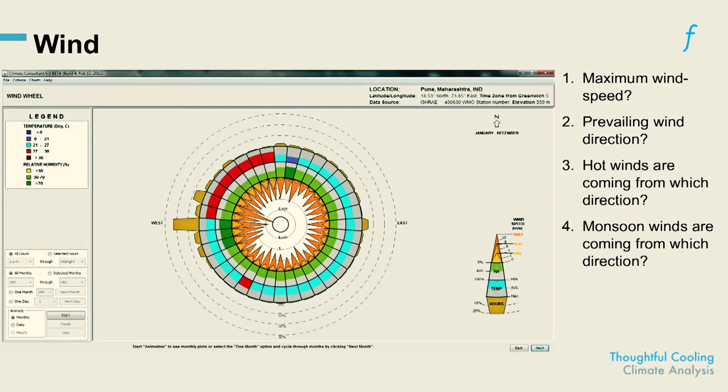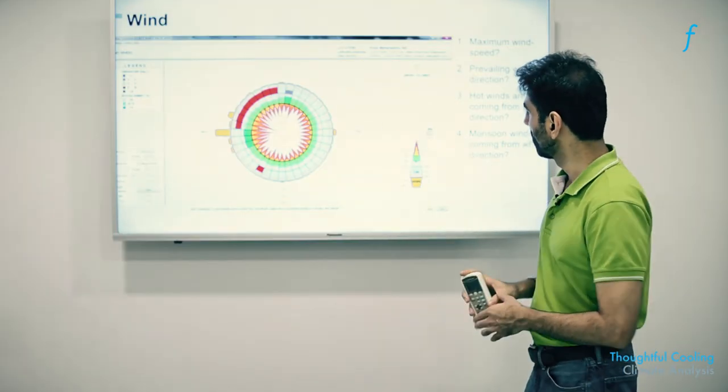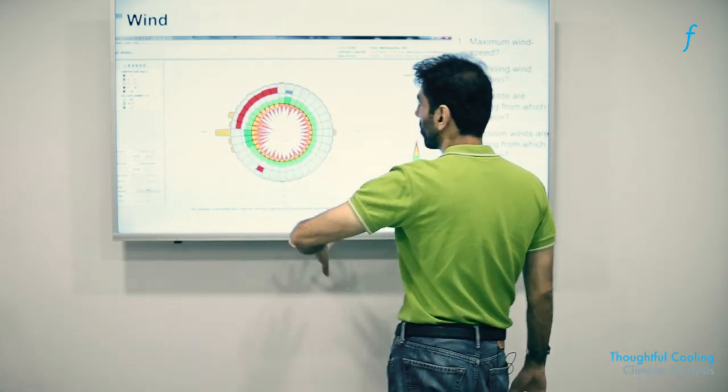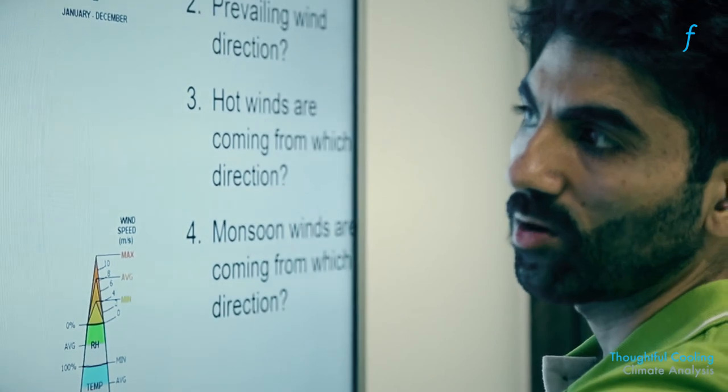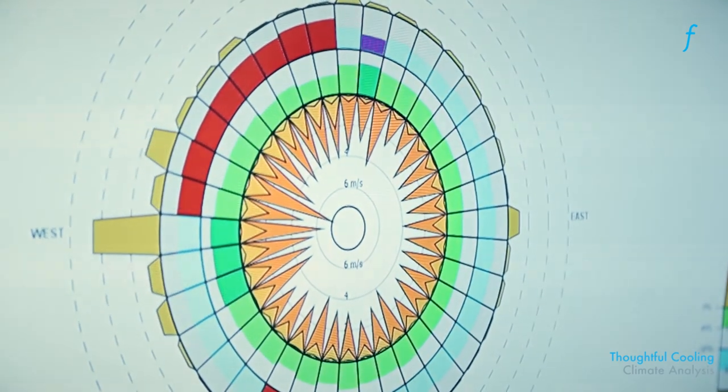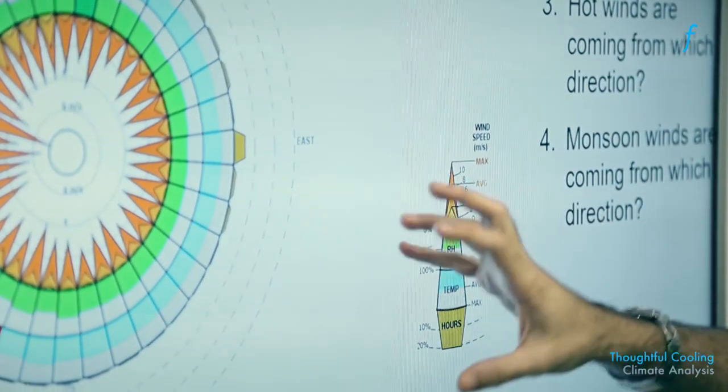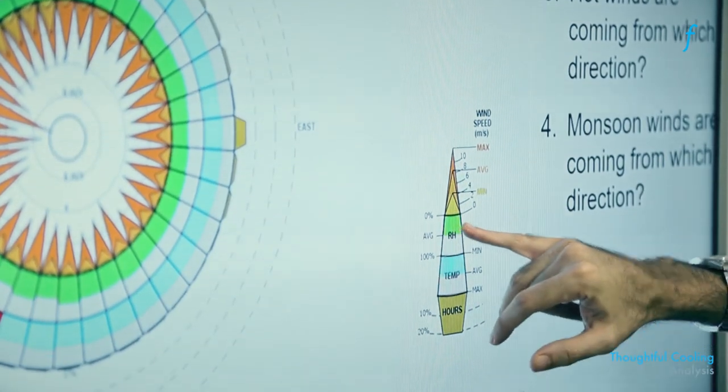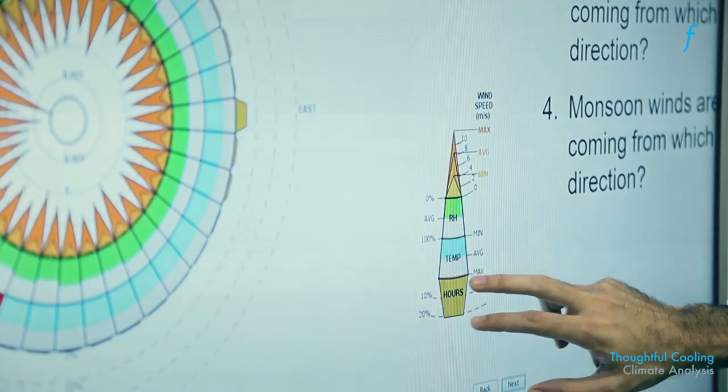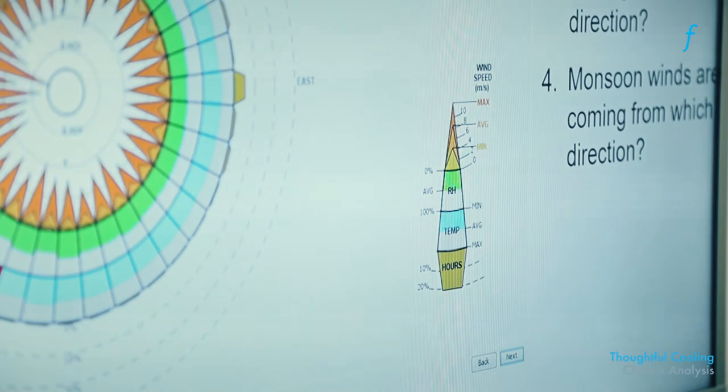The final other piece of data that you can use from Climate Consultant—it's a very powerful tool—is to look at the prevailing wind directions for a certain location. This again is for the city of Pune, Maharashtra. And this here is the legend that you would need to be able to read this chart. Now this tells you the wind speeds as you go from the center—the wind speeds are the highest—and as you go out the wind speeds reduce. And this tells you also the humidity, so this is a very comprehensive chart that tells you the humidity of the breeze that's also coming in. It's telling you the temperature of the air that's coming in and the number of hours that this will be blowing or the wind will be blowing in this direction.